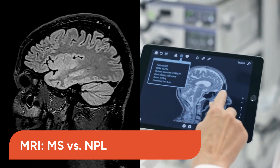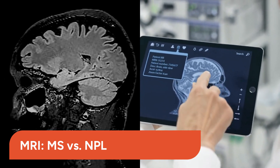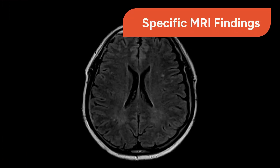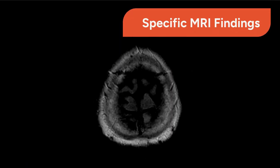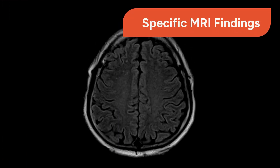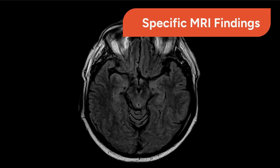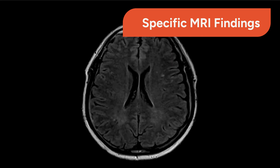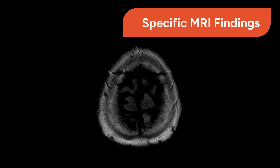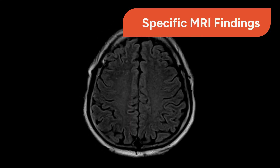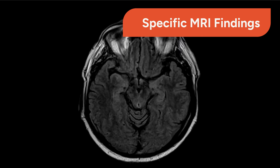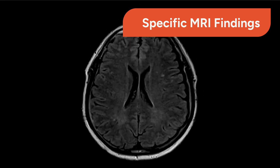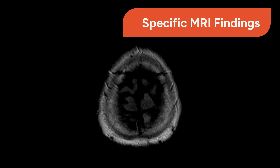These distinct patterns are key to differentiation. For example, Dawson's fingers, which are finger-like projections of demyelination perpendicular to the ventricles, are highly characteristic of MS, while NPL may present with nonspecific white matter lesions.